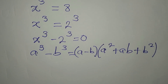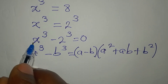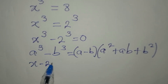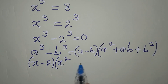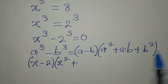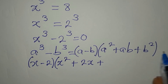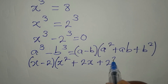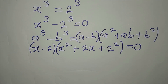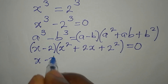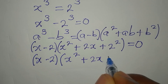Now we express this in that form. So a minus b becomes x minus 2. In the second bracket, a squared becomes x squared, plus ab which is x times 2, giving 2x, plus b squared which is 2 squared — that is 4. So we write it all equal to 0, giving us x minus 2 times x squared plus 2x plus 4 equals 0.